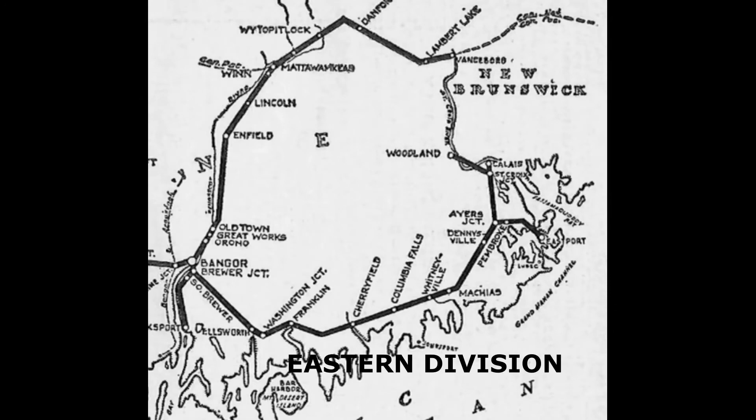Another area to consider modeling was the eastern division, which ran from Bangor to Calais, Woodland, and the paper mill at Woodland. It also ran up north and interchanged with the Bangor and Aroostook and Canadian Pacific railroads. There were a lot of locals out of here, and you also had the Searsport branch, but I chose not to model it because Bangor yard was a fairly large yard.